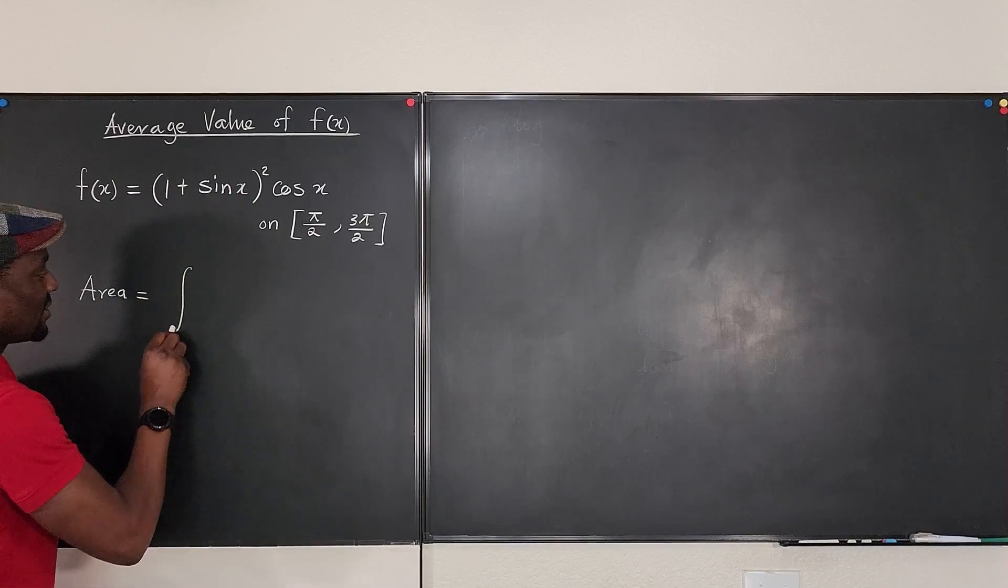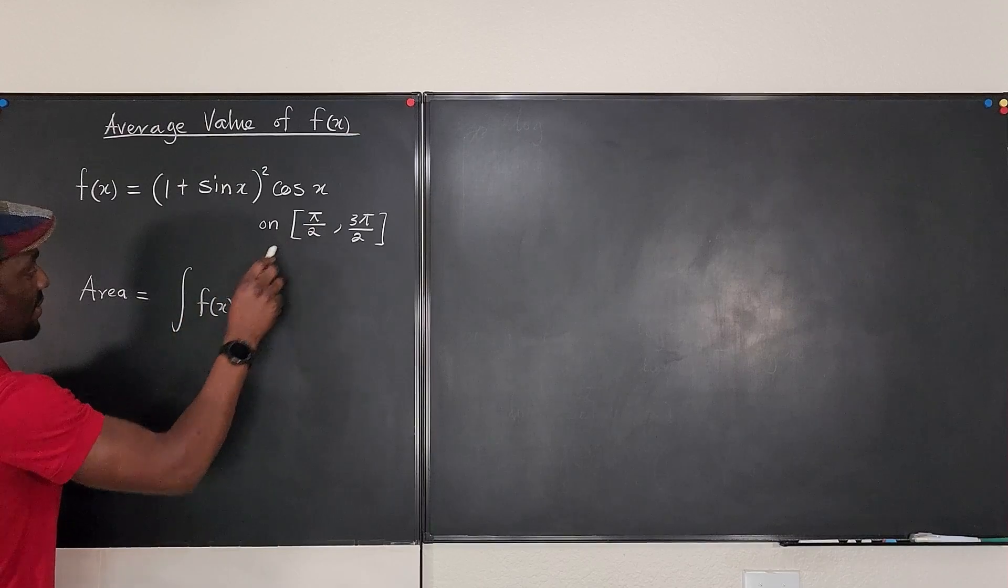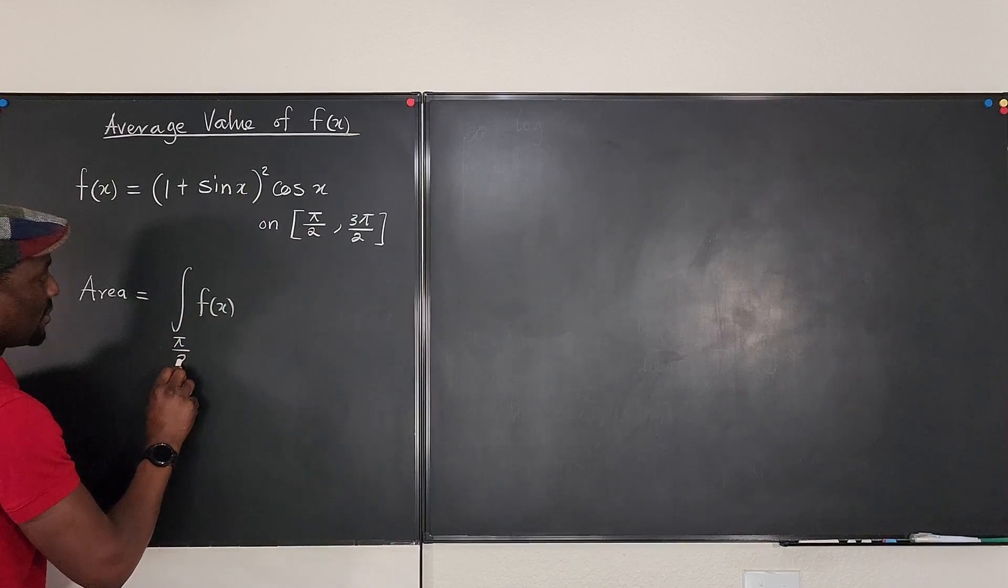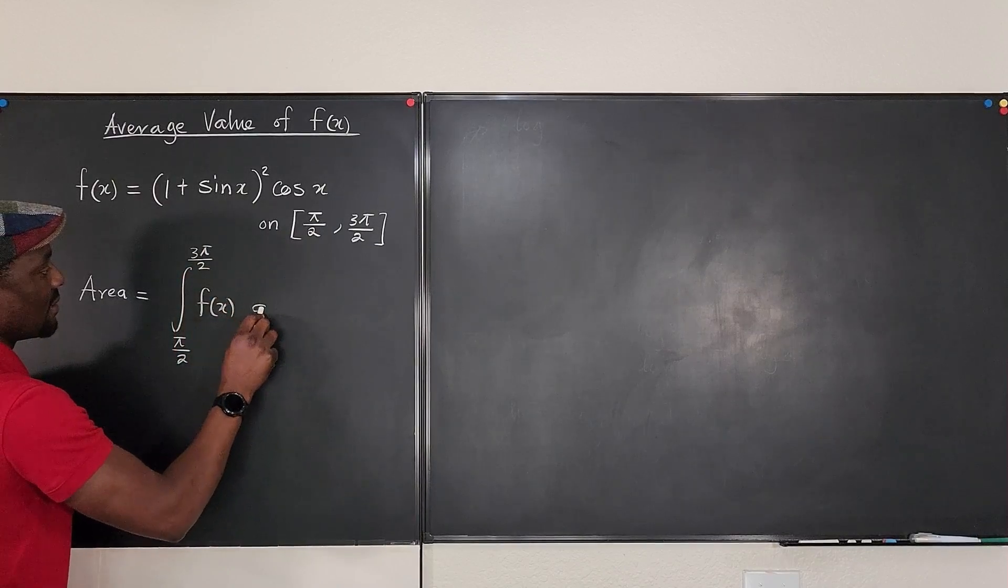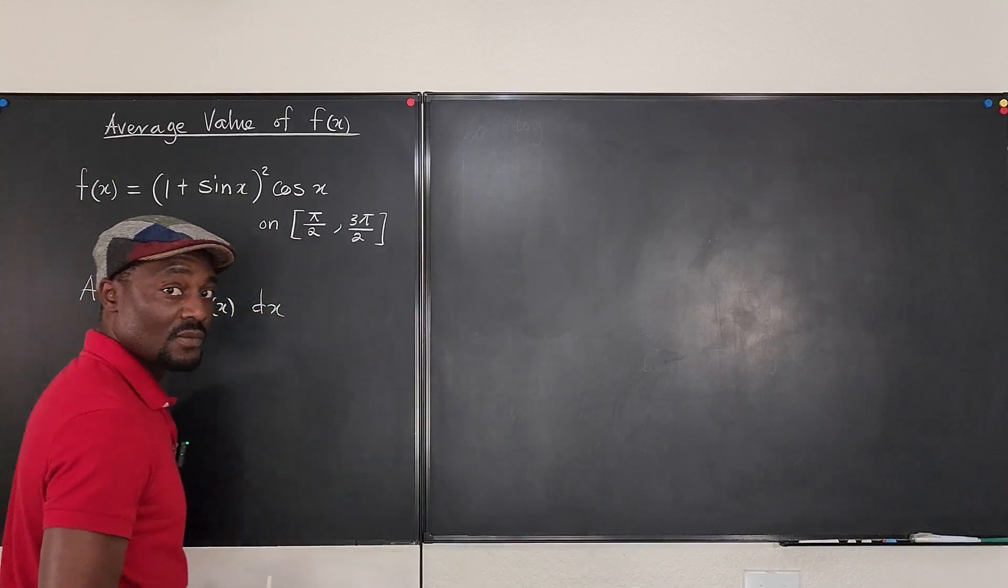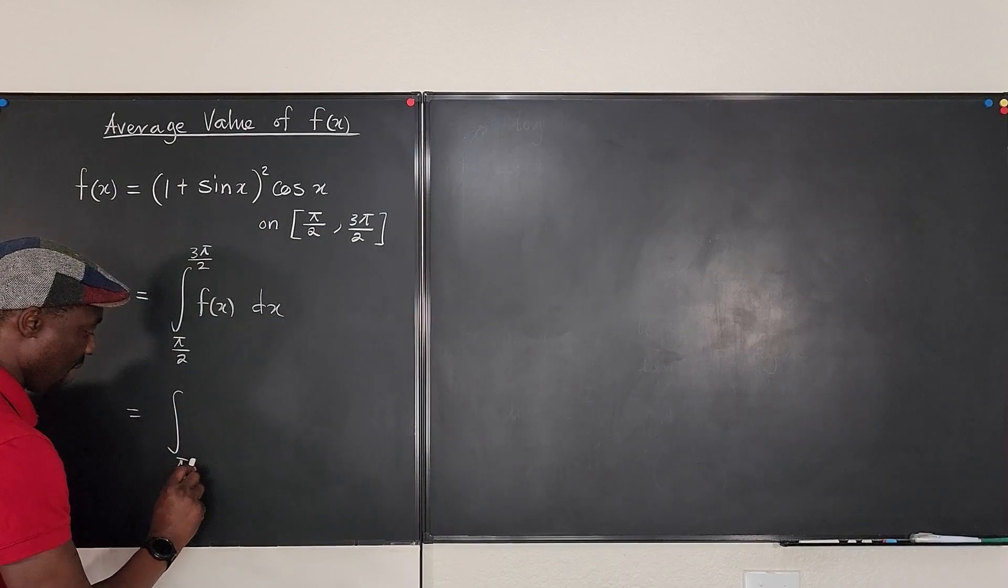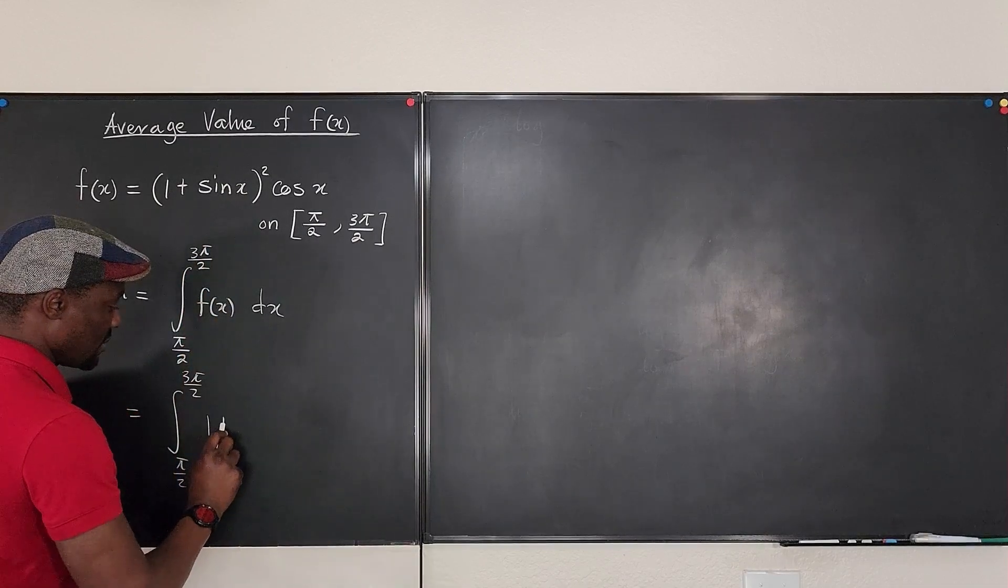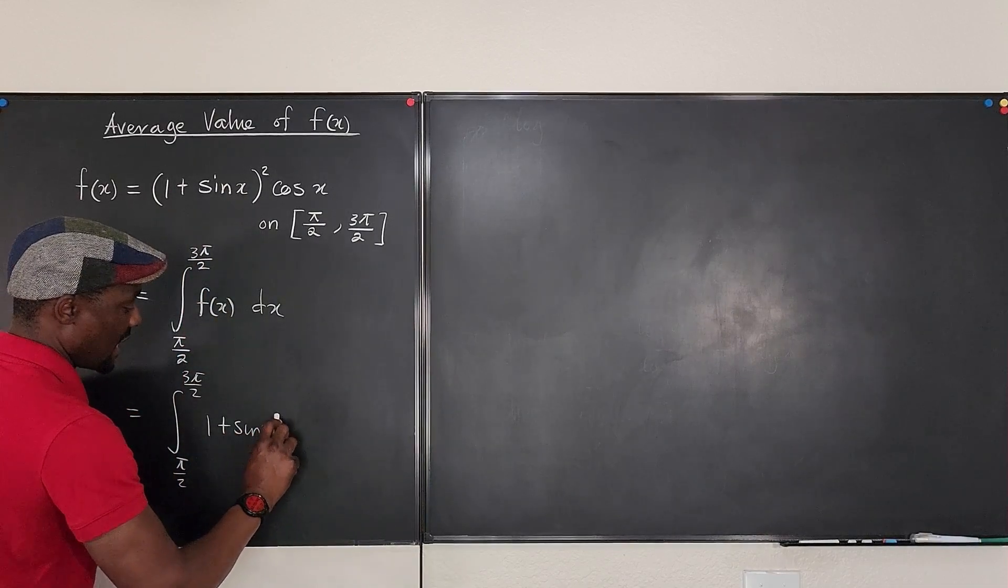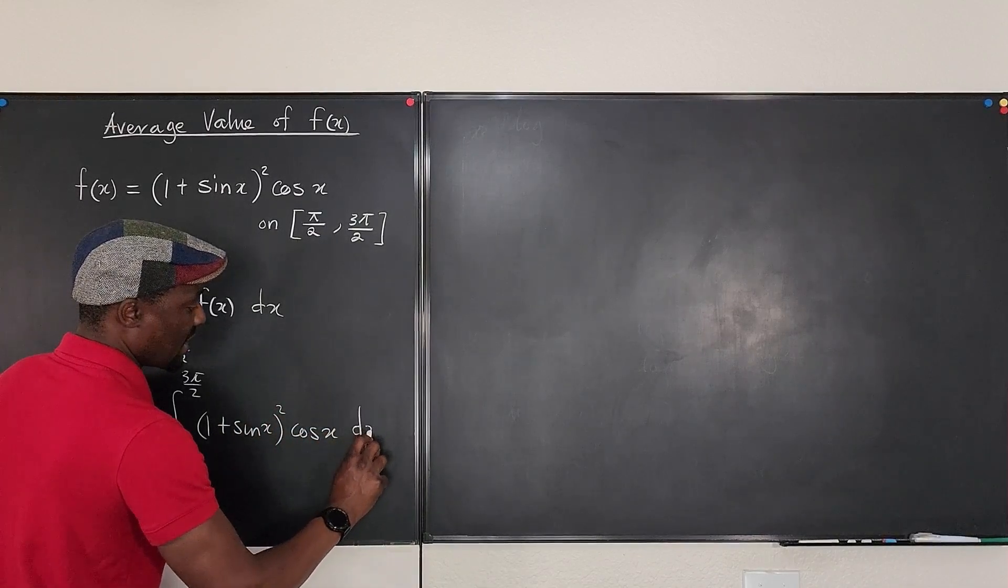So, the area is the integral of f of x, starting from the first point, pi over 2, and stopping at 3 pi over 2. And what is the function? We know that it's going to be the integral from pi over 2 to 3 pi over 2 of (1 plus sine x) squared multiplied by cosine x dx.